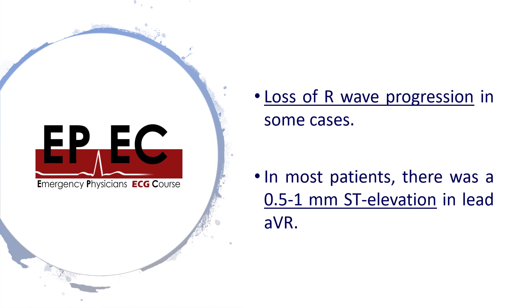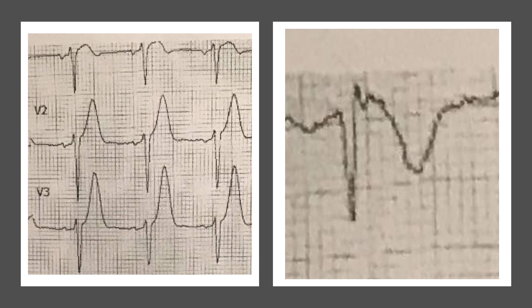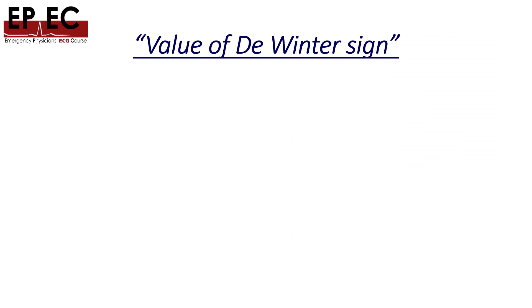They also reported loss of R wave progression in some cases, and in most cases there was a slight ST elevation in lead aVR of 0.5 to 1 millimeter. In our case, there is poor R wave progression — normally described as an R wave in V3 less than 3 millimeters — and we've already noted the ST elevation in aVR.